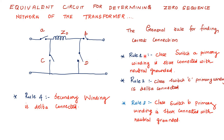The rules are as follows. Rule number one: close switch A when the primary winding is star connected with neutral grounded. Rule number two: close switch C when the primary winding is delta connected. Rule number three: close switch B when the secondary winding is star connected with neutral grounded. Rule number four: close switch D when the secondary winding is delta connected.